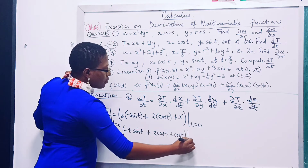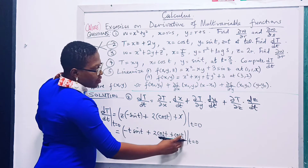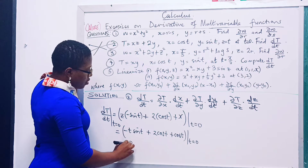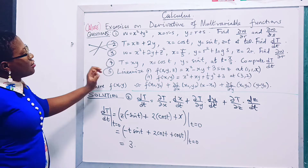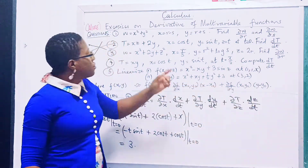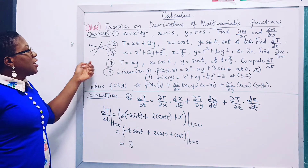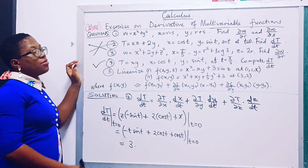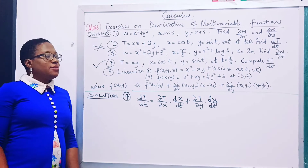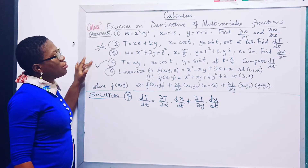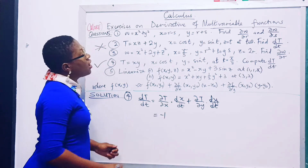Evaluating at t = 0: the first term gives zero, the second gives two, and the third gives one. So two plus one equals three. The expected answer after full substitution is minus 1.